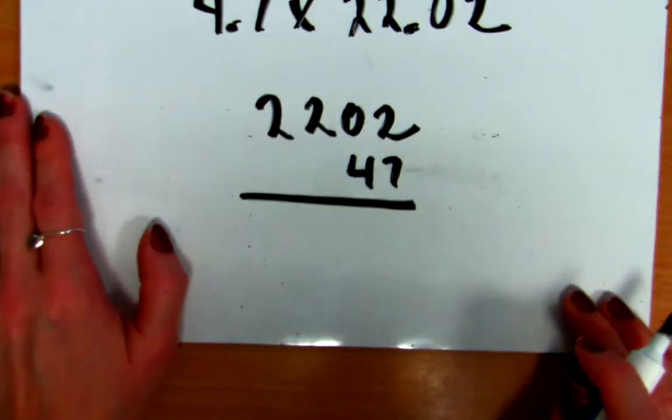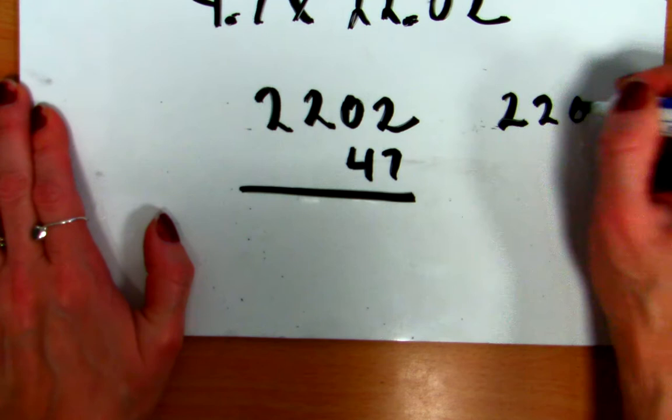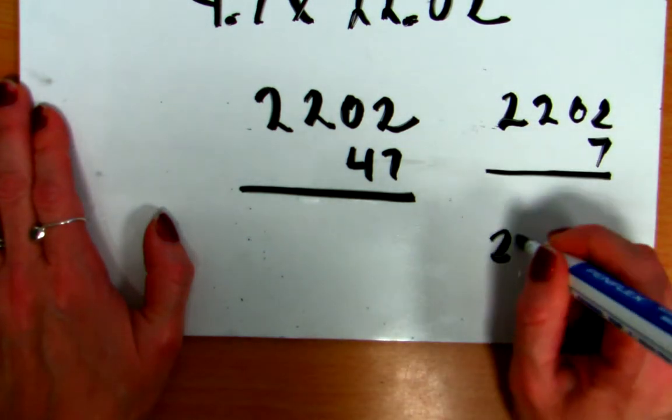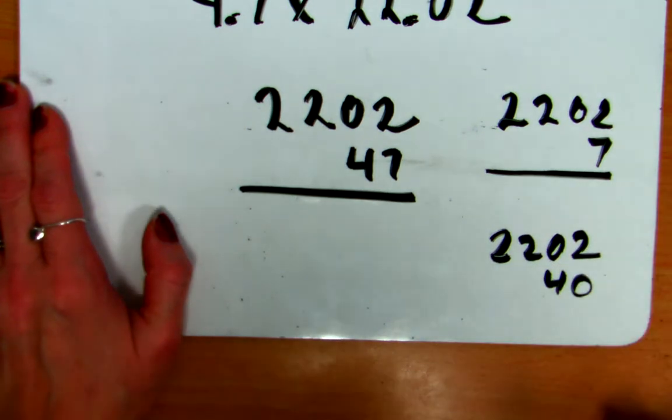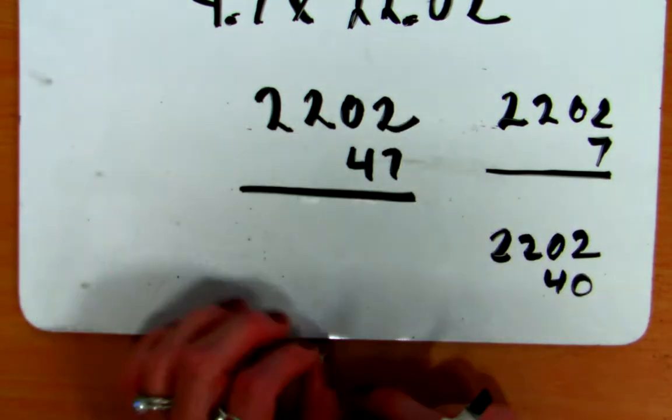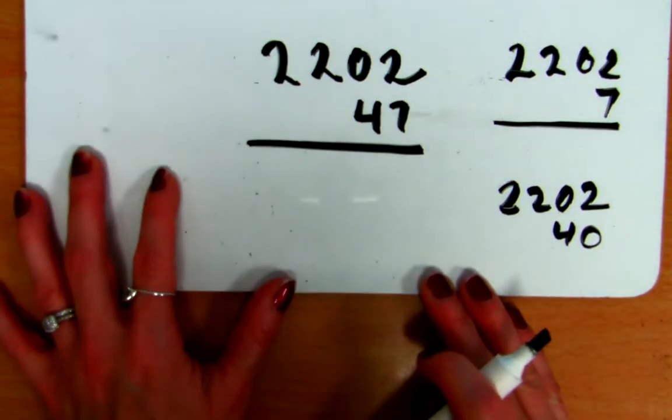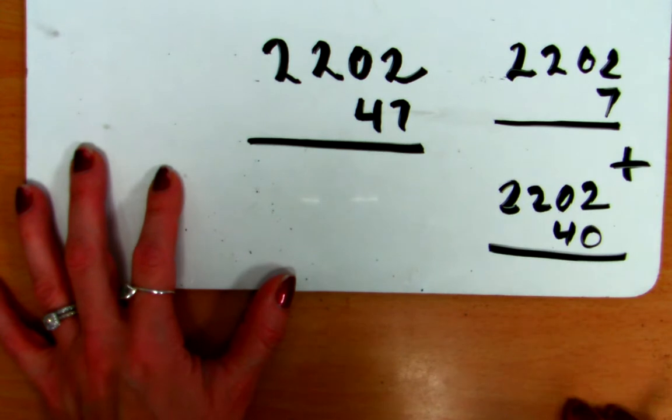Now, I'm going to multiply by 47. What I'm essentially doing here, when I do my multiplication, is I'm going to multiply 22.02 by 7 first, and then I'm going to multiply 22.02 by 40. Because 7 and 40 make 47. So, when I do multiplication here, I'm going to multiply everything by 7 first, and then I'm going to multiply by 40. So, let's look at what happens, and then I add them together.